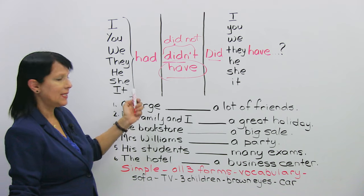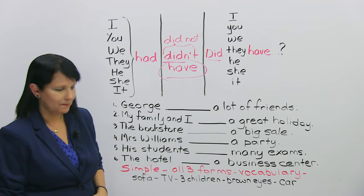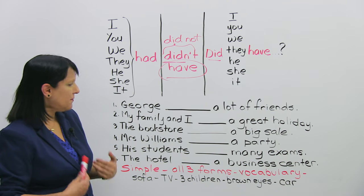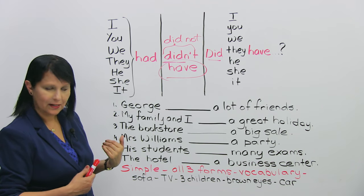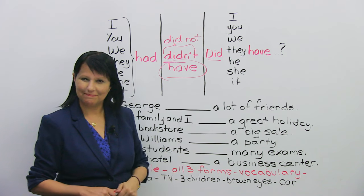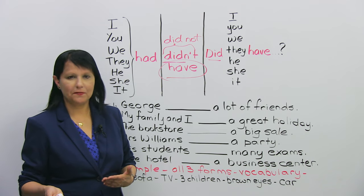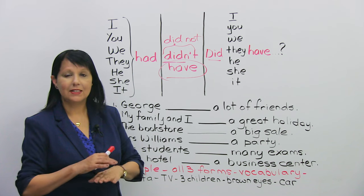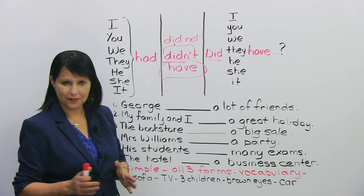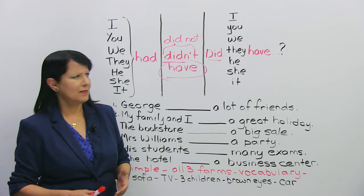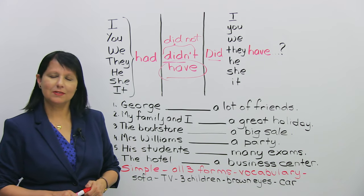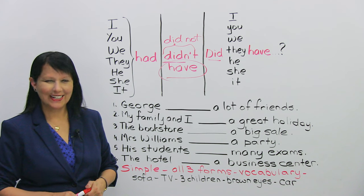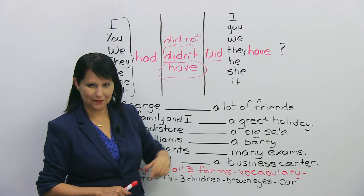Now, George, of course, is like he. Okay? Next. My family and I, in the past, had a great holiday. Okay? Make it negative. My family and I didn't have a great holiday. Did my family and I have a great holiday? I don't know. It's hard to say. Okay? Did we have? Good.